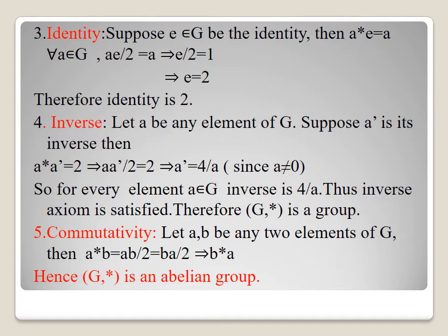Identity: suppose e in G is the identity, then a star e equals a for all a in G. Using the given condition, ae/2 equals a, so e/2 equals 1, giving e equals 2. Therefore the identity is 2. Inverse: let a be an element of G and a' be its inverse, then a star a' equals 2. So aa'/2 equals 2, giving a' equals 4/a, where a ≠ 0. So for every element a in G, its inverse is 4/a. Inverse axiom is satisfied.